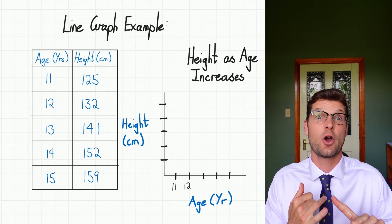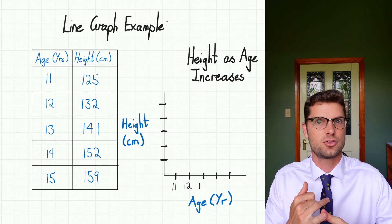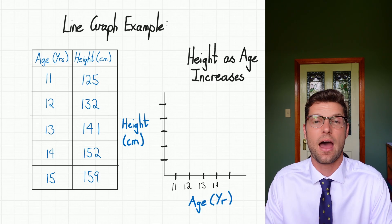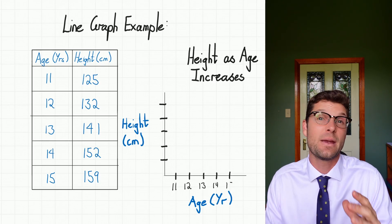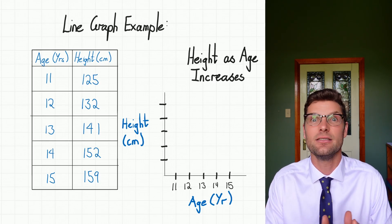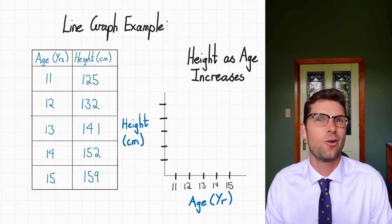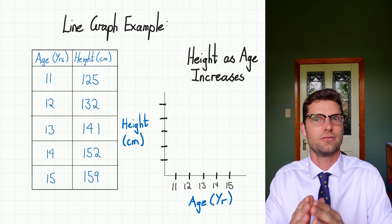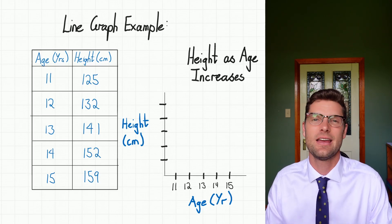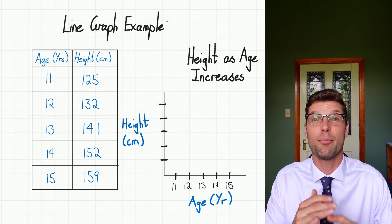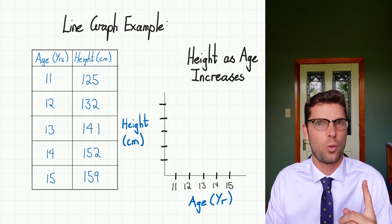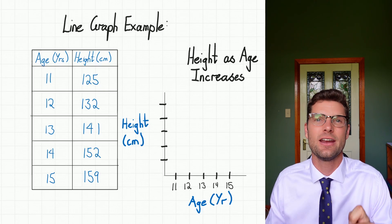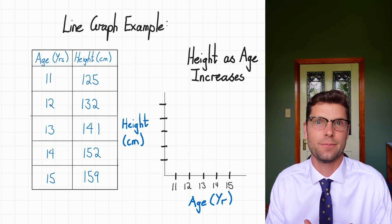Let's do the bottom axis first. The categories we've got are 11, 12, 13, 14, 15 — so we just have to put those up. Because the scale is just one year each time, we can put 11, 12, 13 — done. The scale is going up by the same amount, one year, and they're evenly spread. This whole bottom section's done.